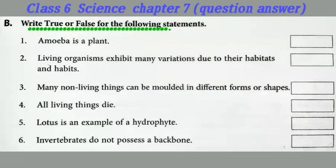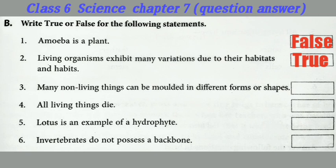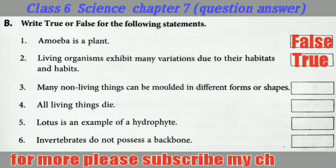Section B: True or False for the following statements. Question number 1: Amoeba is a plant — this is false, because it is an animal. Question number 2: Living organisms exhibit many variations due to their habitats and habits — the answer will be true. Question number 3: Many non-living things can be molded in different forms or shapes — the answer will be true.